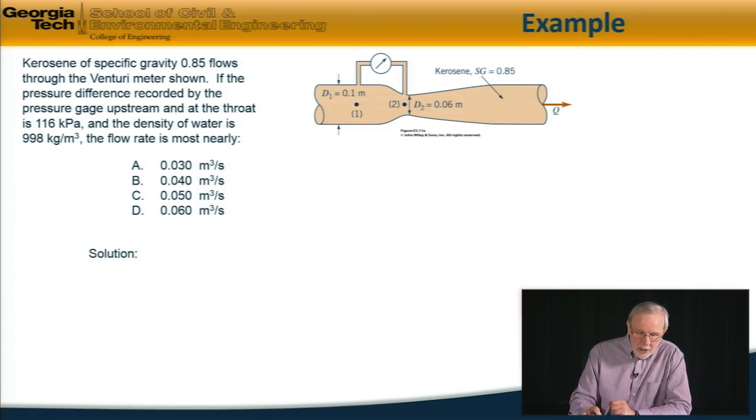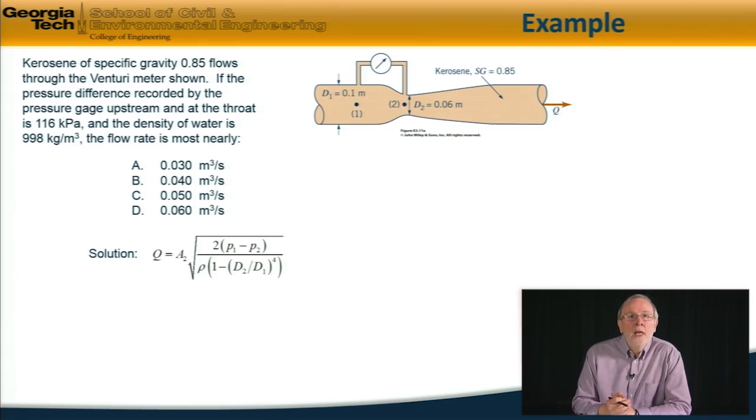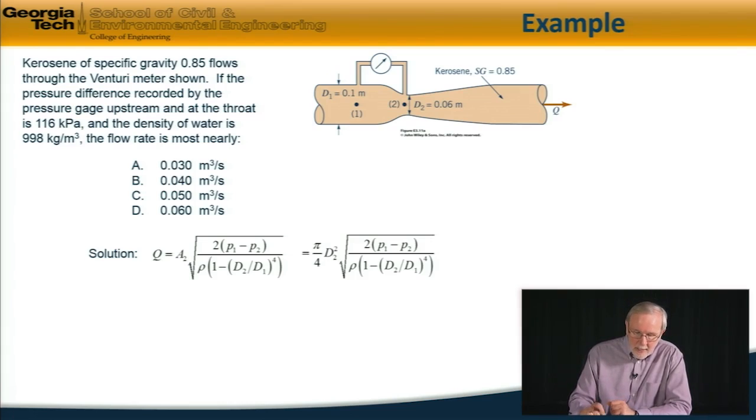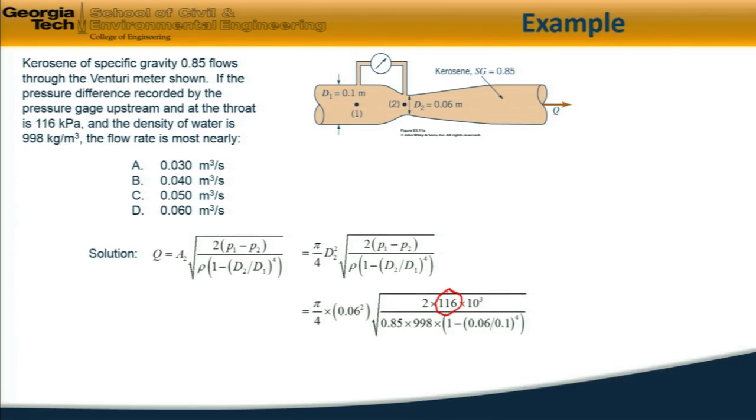So to solve this, we invoke the venturi meter equation that I gave on the previous slide, as shown here. And the area is pi by 4 d squared. So continuing on, I can substitute in the numbers. The diameter is 0.06 meters at the throat.